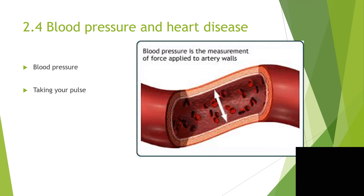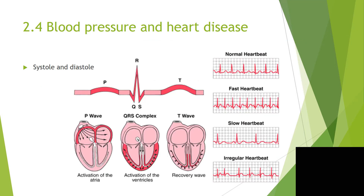Section 2.4: Blood pressure and heart disease. Blood pressure is the measurement of the pressure on the artery walls. Remember that only arteries have pressure. You can take your pulse — that is, measure your heartbeat — at your wrist and at your neck, because here the arteries are close to the skin. Blood pressure is made up of two parts: the systole is the high number, which is the blood pressure when the ventricles contract; the diastole is the lower number, when the ventricles relax and the atria contract.